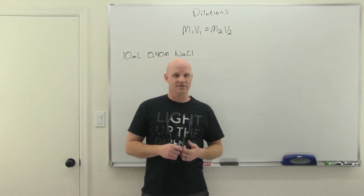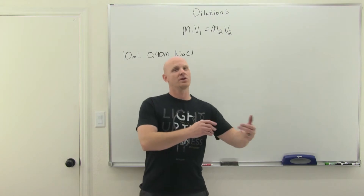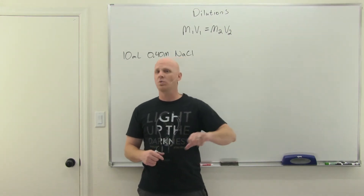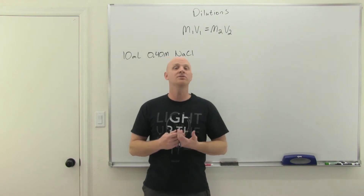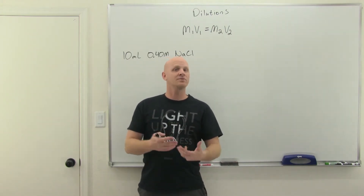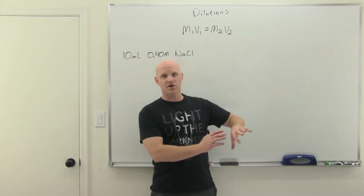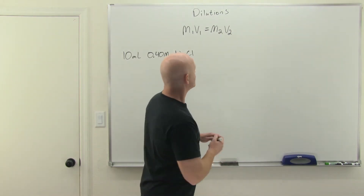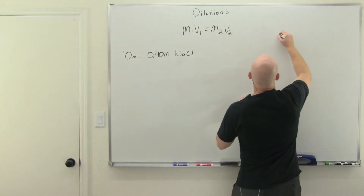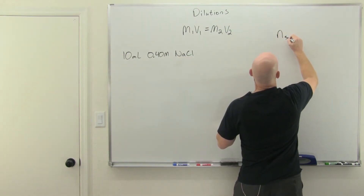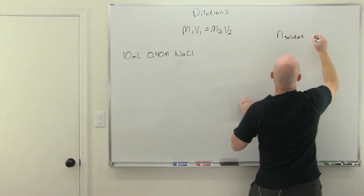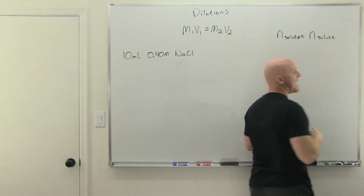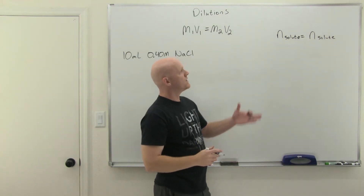The 30 packets that ended up in my pitcher are the same 30 packets that ended up in my tub. That's the key: with a dilution, you're not adding any more solute — you're only adding solvent. So you could look at this and say that the moles of solute you start with in a typical dilution are going to equal the moles of solute you end with.